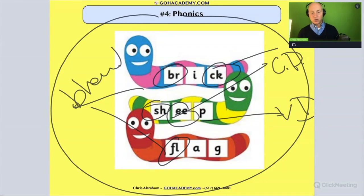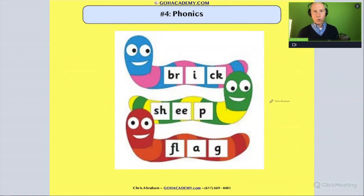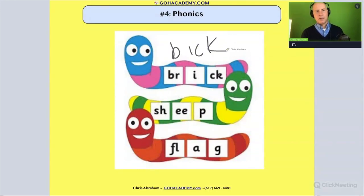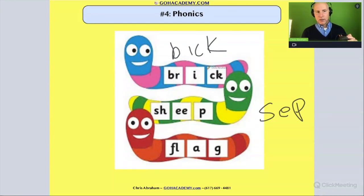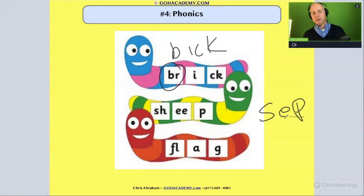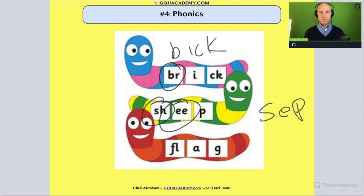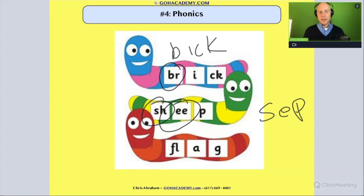Now, if we saw students struggle with these words in their oral reading — like instead of saying 'brick' they say 'BIC,' or instead of saying 'sheep' they say 'SEP' — let's say the student made those two miscues. If they say 'BIC' instead of 'brick,' then they're having difficulty with a consonant cluster, an initial consonant cluster. Or if they say 'SEP' instead of 'sheep,' then they're having difficulty with an initial consonant digraph and a vowel digraph. So we want to be familiar with phonics elements so we can point out when the student is having difficulty with them on their oral fluency essay.